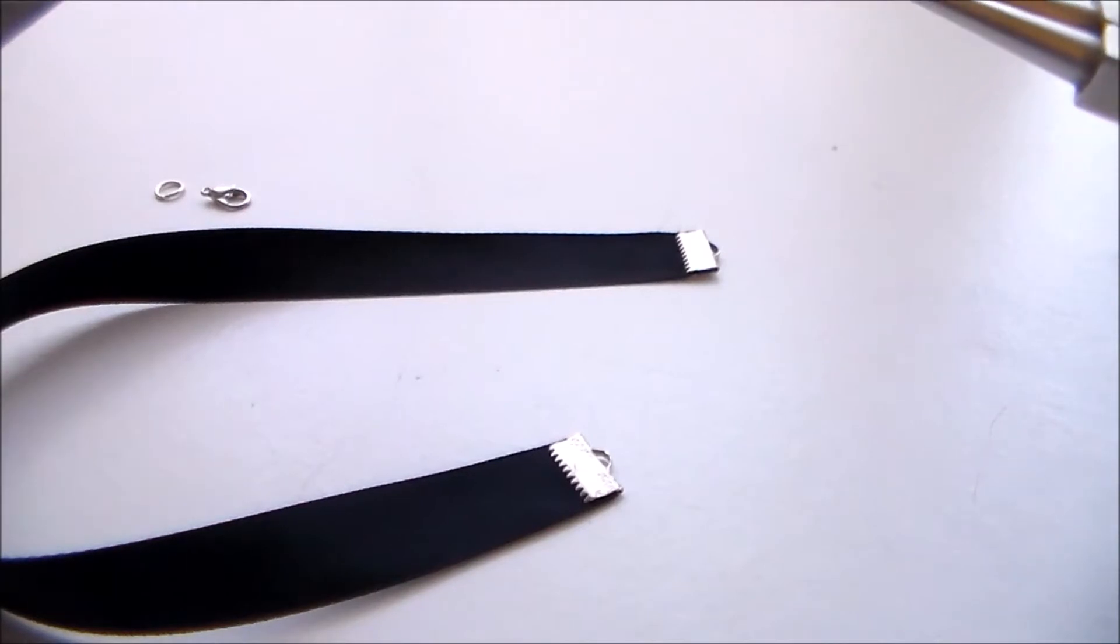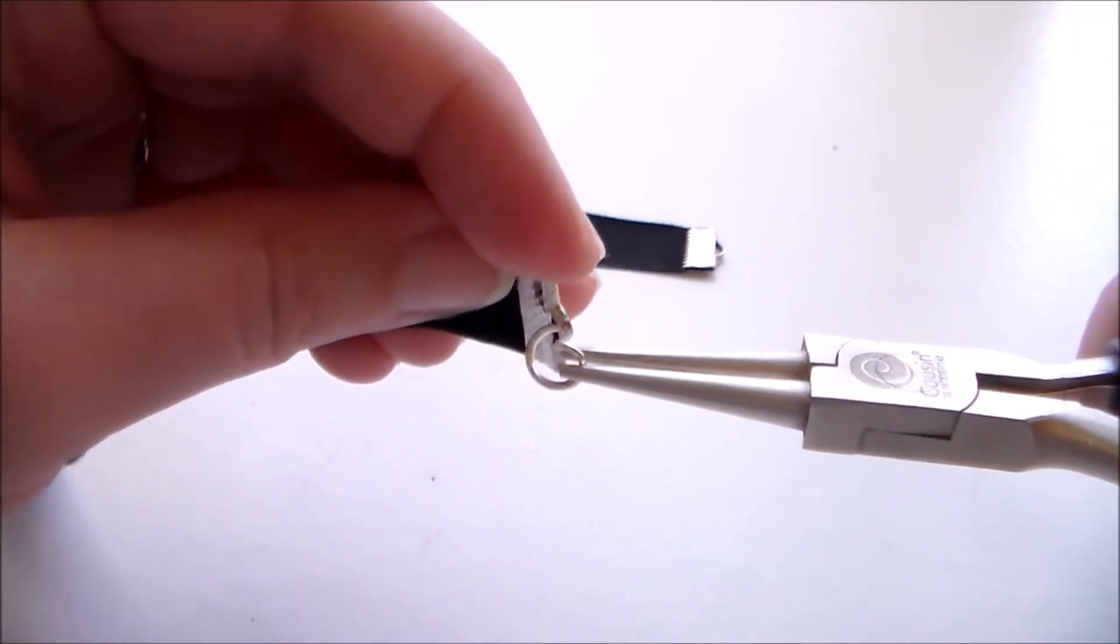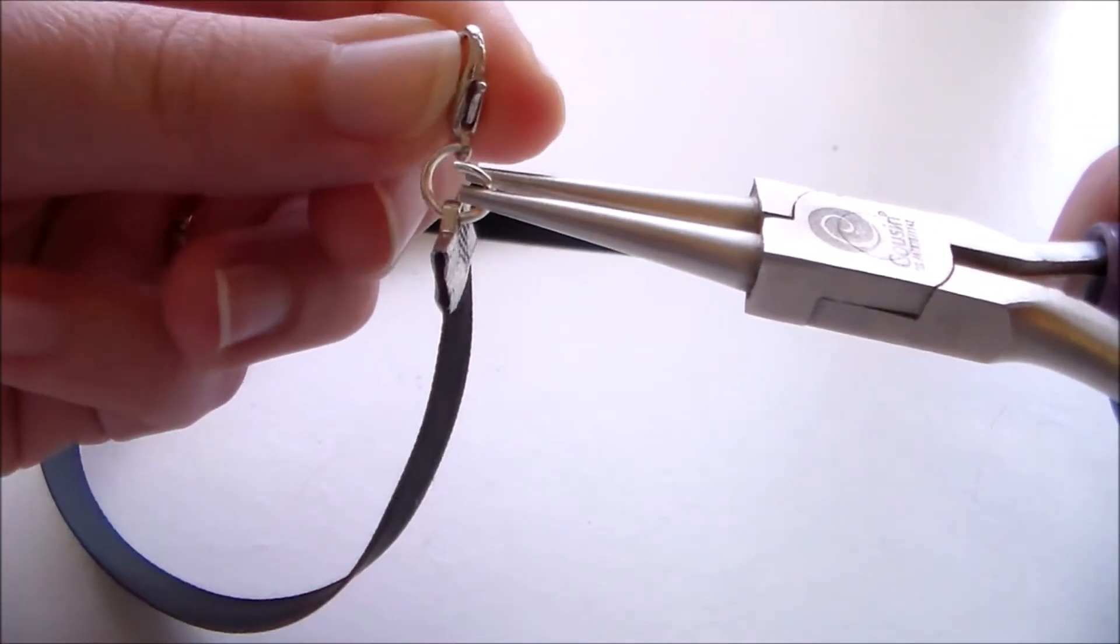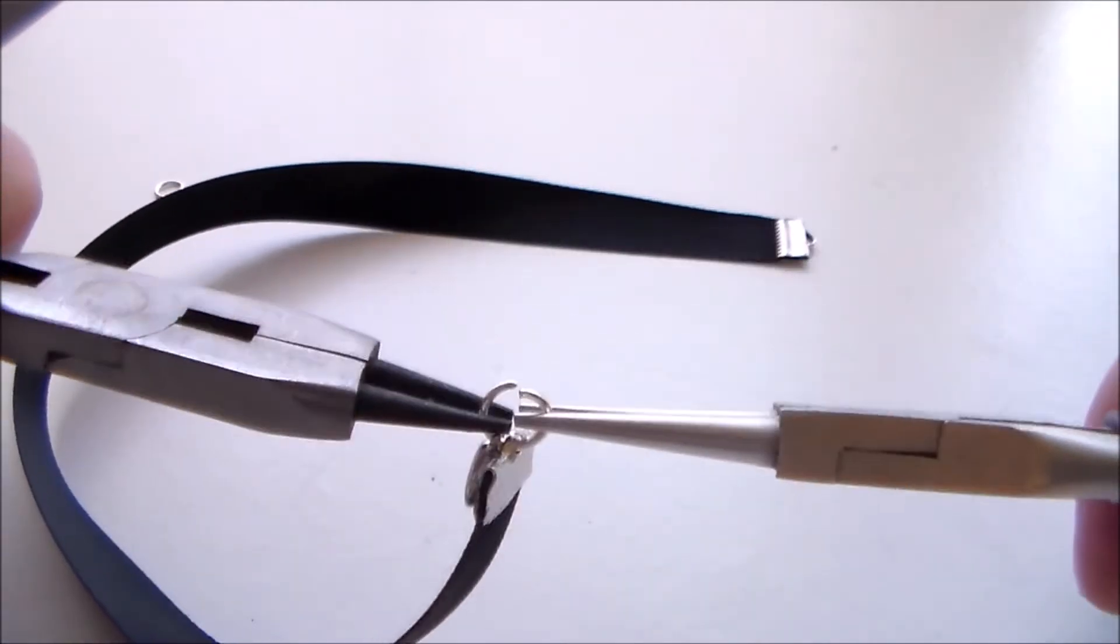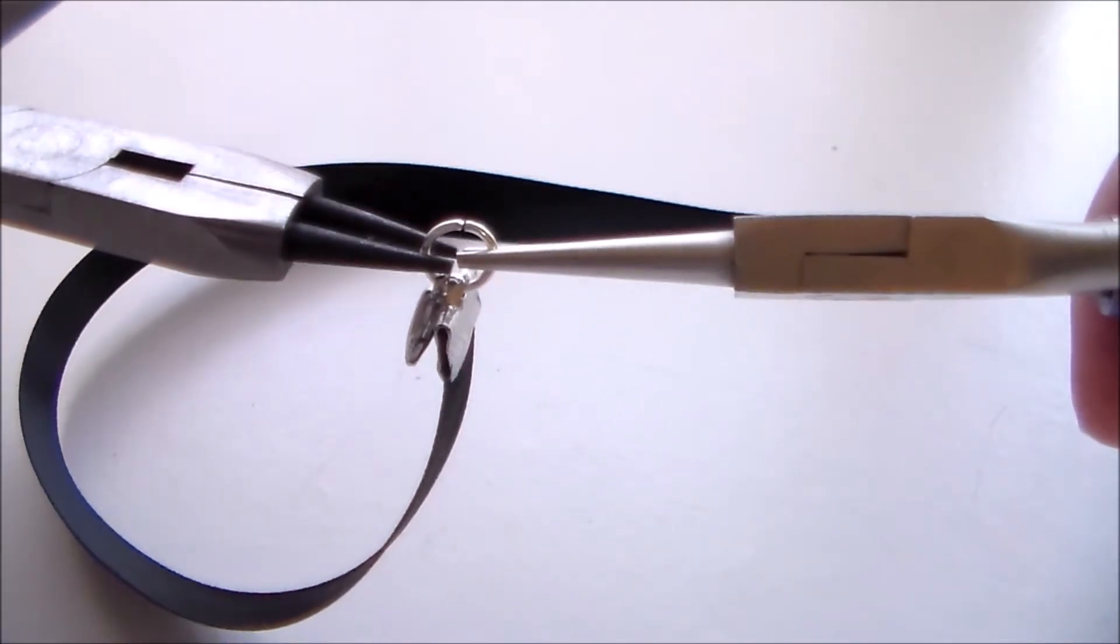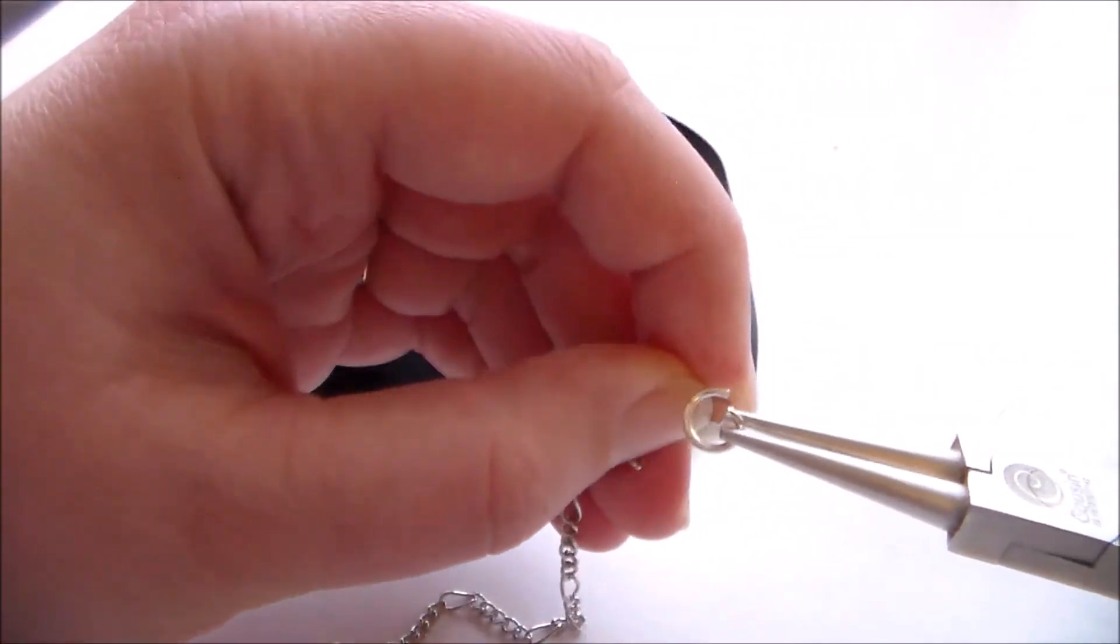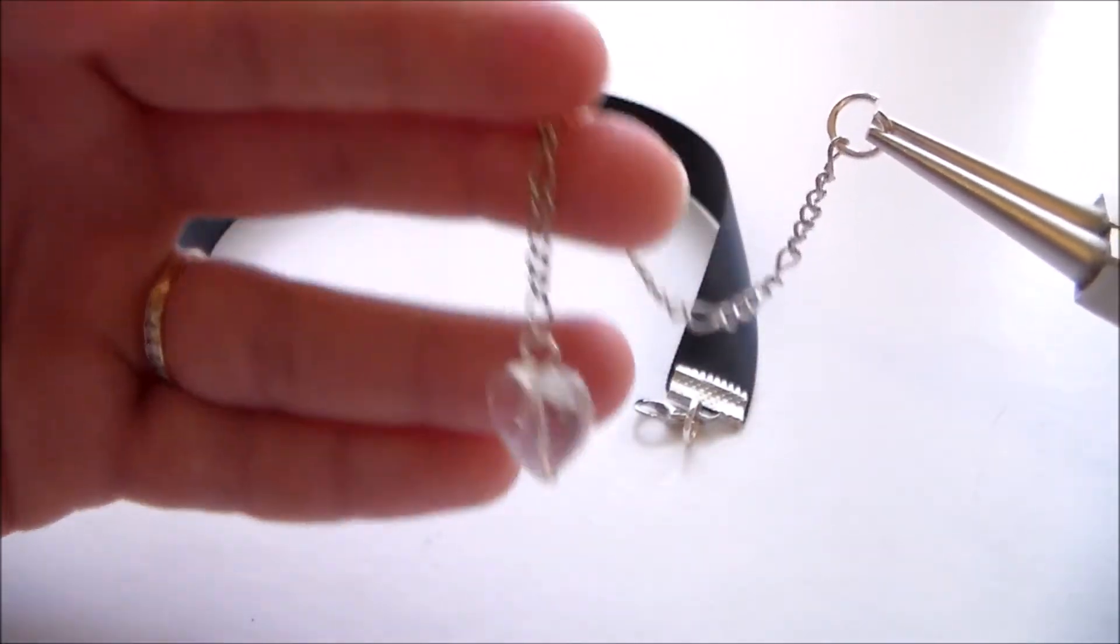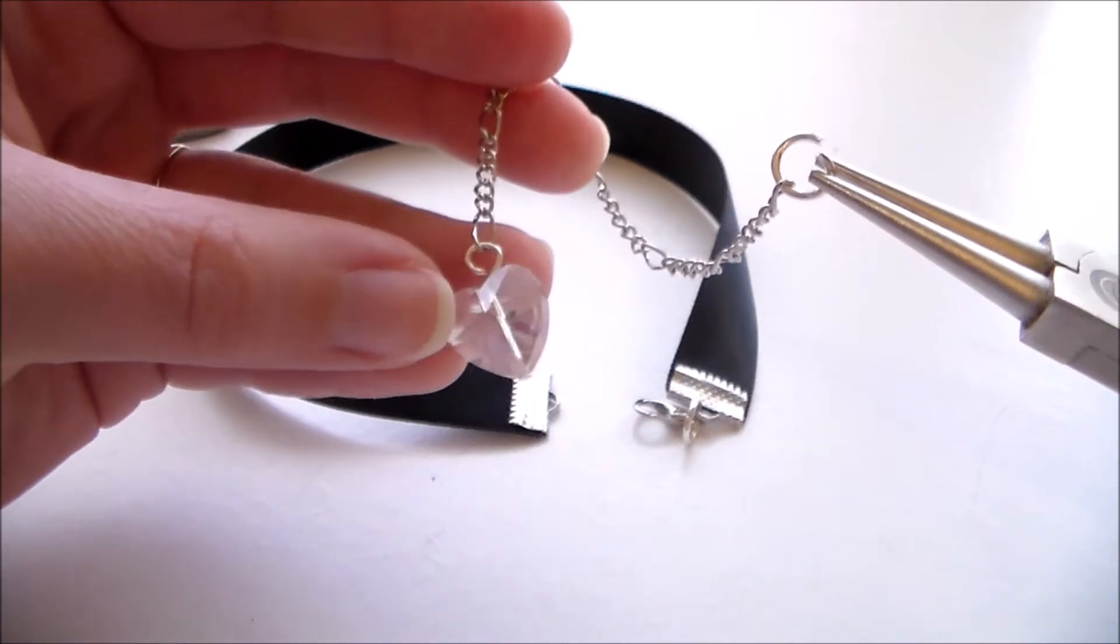On one side, use a jump ring to attach a lobster claw clasp. On the other side, use a jump ring to attach a length of chain to make it adjustable. I also added on this little glass heart charm just to make it a little bit more Cinderella-ish.